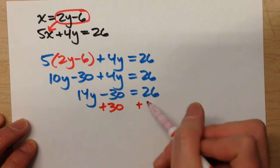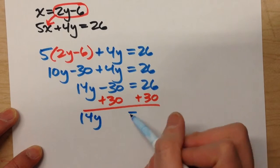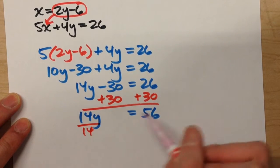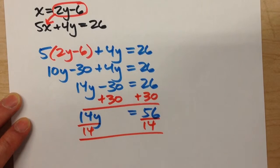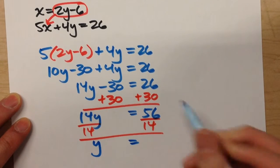Add 30 to both sides, 14y equals 56. Divide both sides by 14, y equals 4.